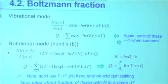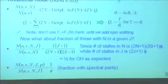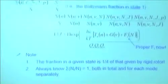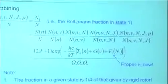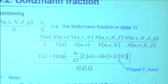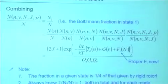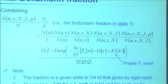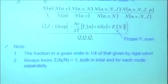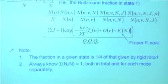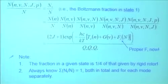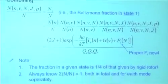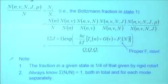When you combine all of these — electronic, vibrational, rotational, and the lambda doubling — you get the fraction in the absorbing state. When you put it all together, the fraction in a given state is one-fourth of what you would have gotten for a rigid rotor. The factor of four comes from lambda doubling times spin splitting. You have to keep checking that you haven't left out a factor of two or four.